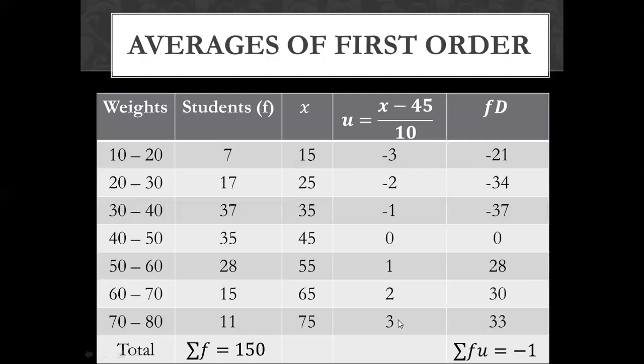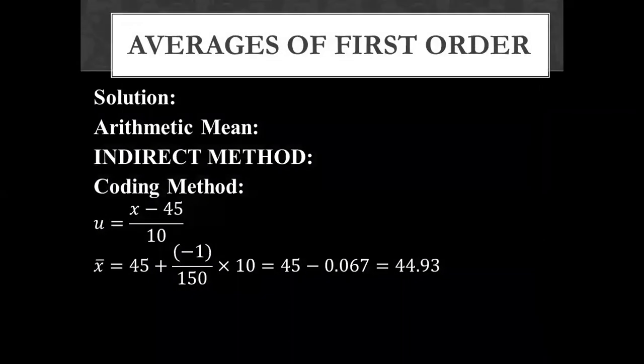Now we have to make fu. What will we do for fu? We will multiply f and u. 7 into minus 3 minus 21. 17 into minus 2 minus 34. 37 into minus 1 minus 37. Then 35 into 0, 0. 28 into 1, 28. 15 into 2, 30. And 11 into 3, 33. The total is minus 1 and f total is 150. These answers we will write in the formula.